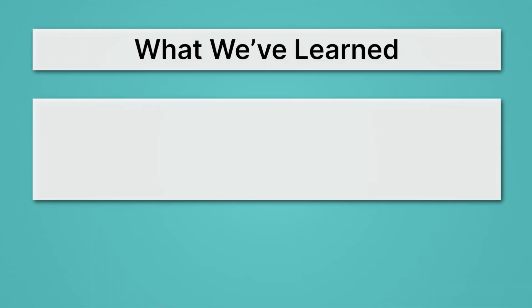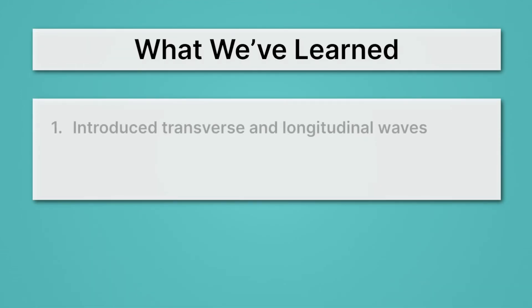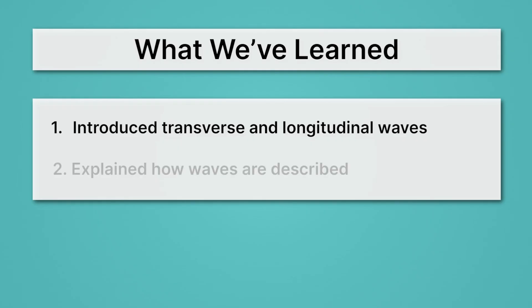Let's review what we've learned. First, we introduced transverse and longitudinal waves: transverse waves oscillate up and down, and longitudinal waves oscillate forwards and backwards. Lastly, we explained how waves are described, with things like amplitude, wavelength, and frequency.